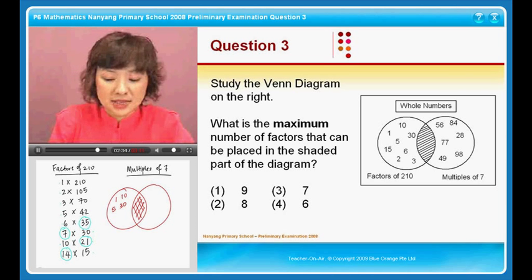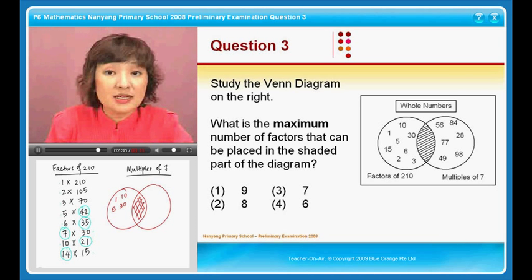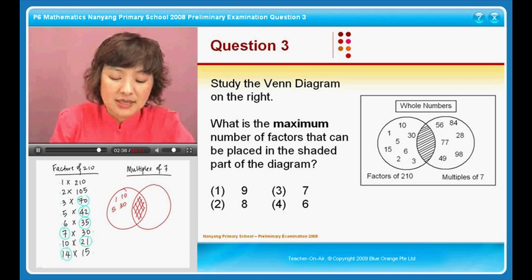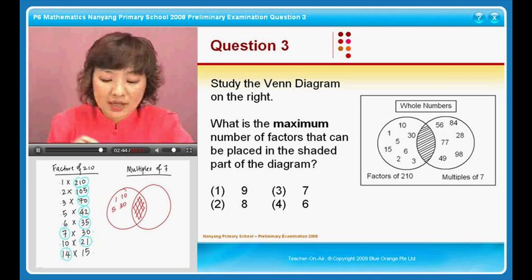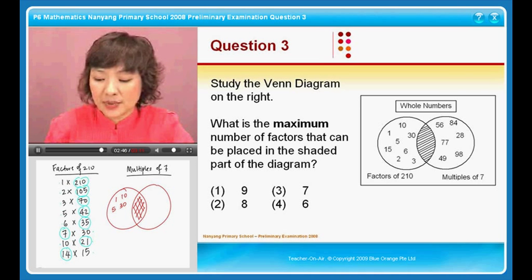42? Yes. 6 times 7 is 42. 70? Yes. 10 times 7, 70. 105? Yes, it is. 210? Yes, it is. So you'll find all these numbers that are circled appearing here.